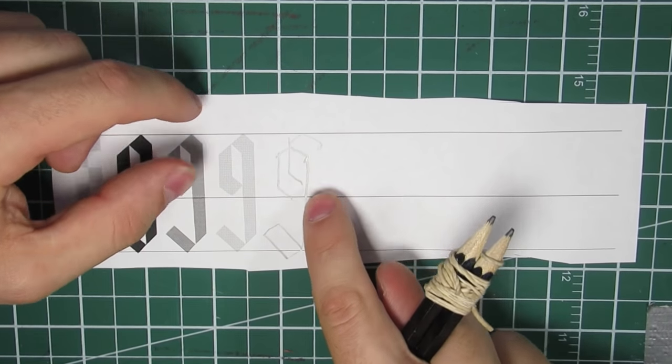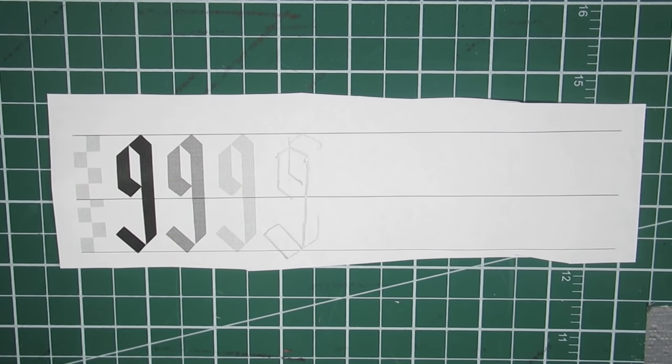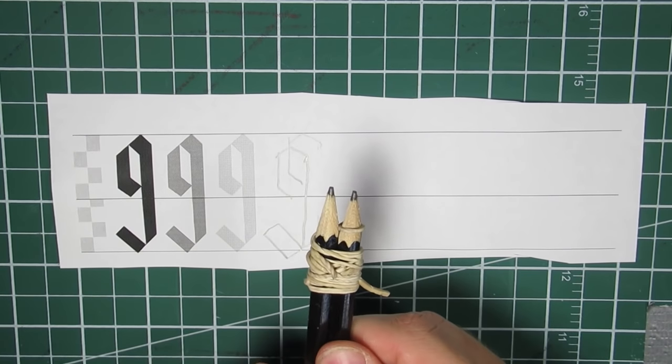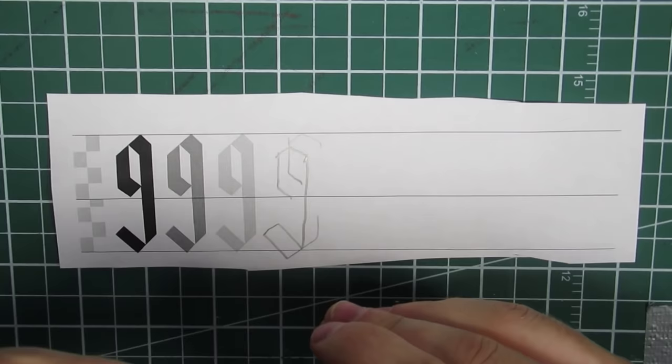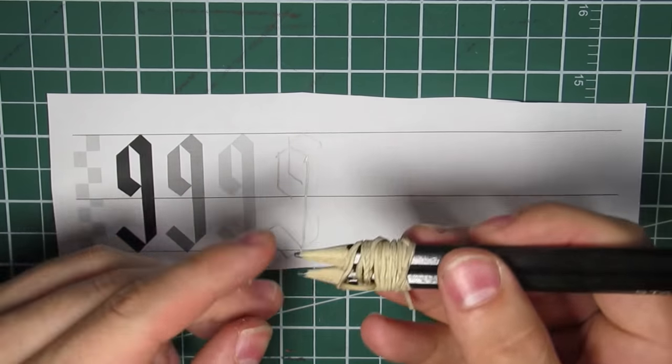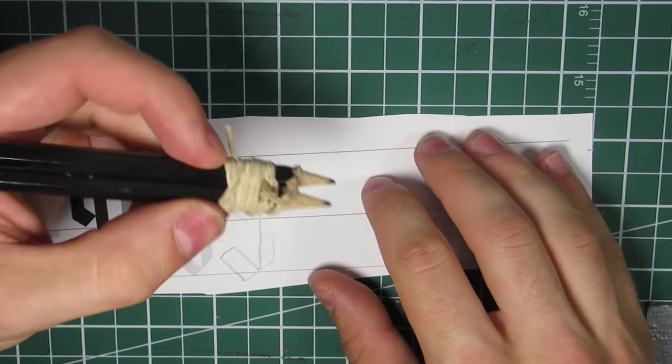See, if you get anything like this, that means your pencils are misaligned. So you want to make sure, just to kind of fix it a little bit. Press it against the table so that you know they're relatively straight. And we're going to try that again.